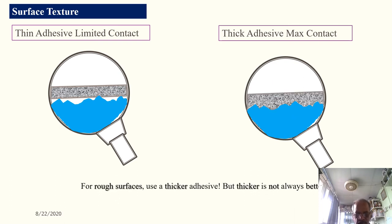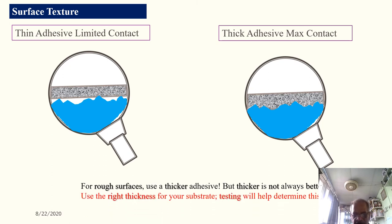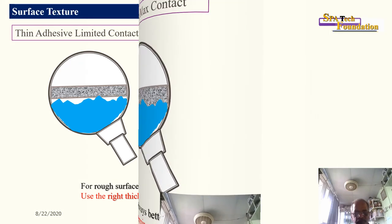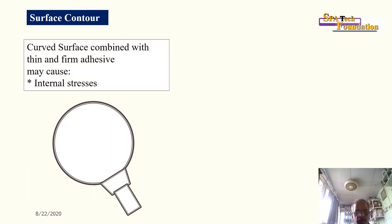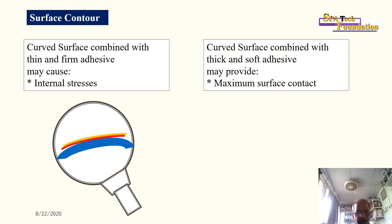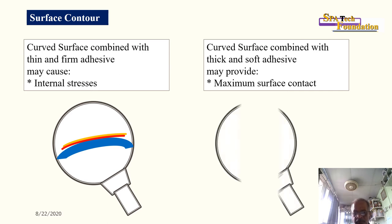A thick adhesive maximizes contact on rough surfaces, while a thin adhesive provides limited contact. For rough surfaces, use a thicker adhesive — but thicker is not always better; use the right thickness and rely on testing. A curved surface combined with a thin, firm adhesive may cause internal stress and edge lifting. A curved surface combined with a thick, soft adhesive may provide maximum surface contact.